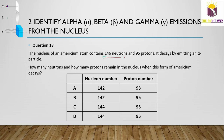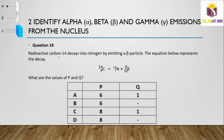Question 19: Radioactive carbon-14 decays into nitrogen by emitting a beta particle: ¹⁴ₚC → ¹⁴₇N + ⁰qe. What are the values of p and q? Beta particles are represented as ⁰₋₁, so q = −1. Since beta decay increases the atomic number by 1, carbon has atomic number 6, so p = 6. The answer is p = 6 and q = −1, option B.